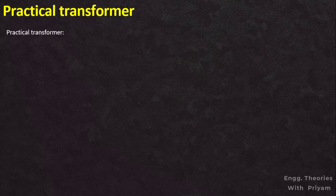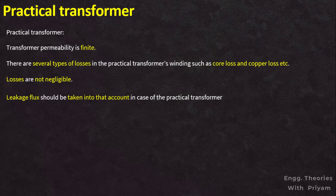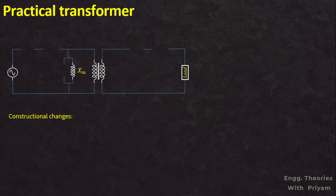In this lecture we will talk about the practical transformer. For the practical transformer, the permeability is finite. There are several types of losses: core loss, copper loss, eddy current loss, hysteresis loss, etc. These losses are not negligible and must be included in the calculation. Also, the leakage flux should be taken into account in the case of practical transformers.